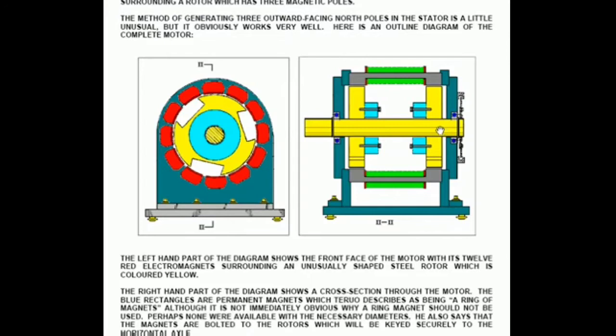Shown in blue here are four electromagnets, sorry, I beg your pardon, four permanent magnets, which have got their north face facing the mild steel rotor piece here. So the north is on this side, the south is on this side. North, south, north, south, north, south.